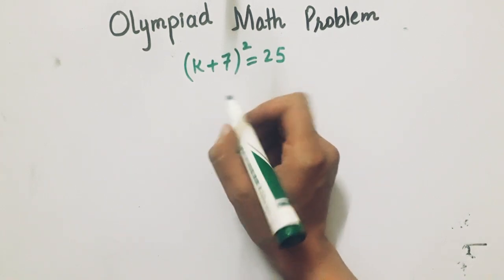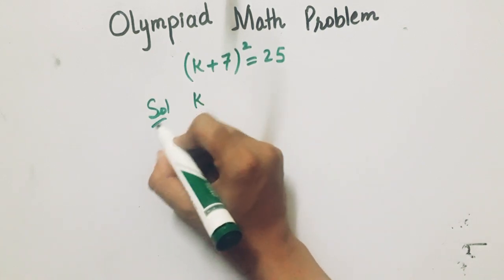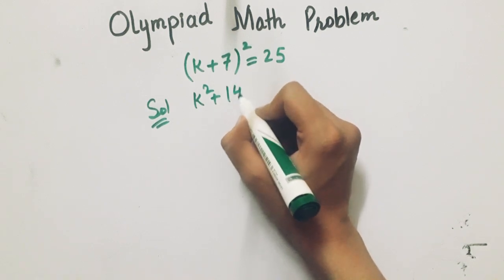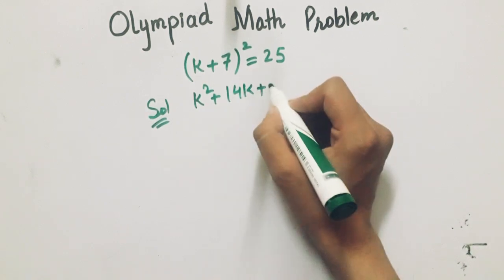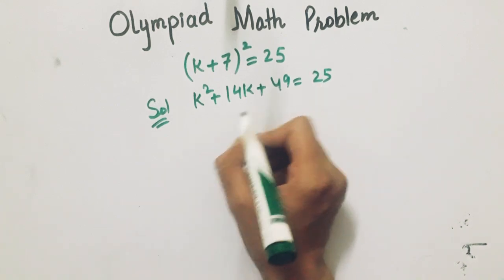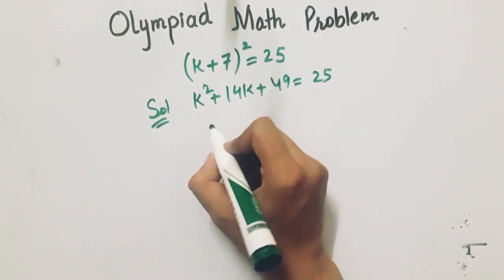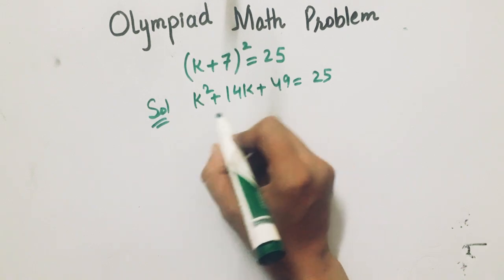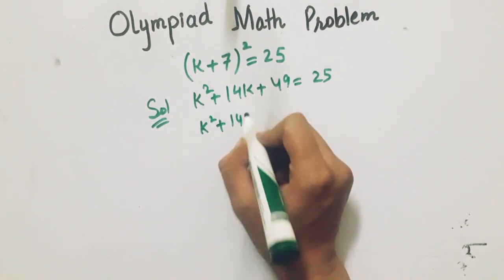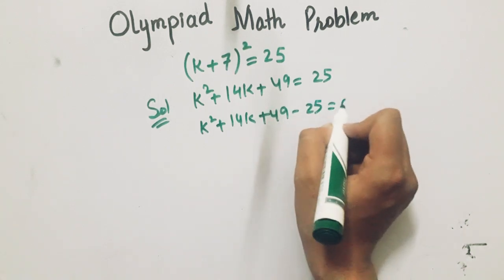Now we will solve this step by step. First of all, open the square. So we get x squared plus 14x plus 7 sevens are 49. Now we will write this as x squared plus 14x plus 49 minus 25 equals 0.